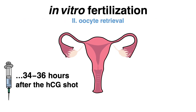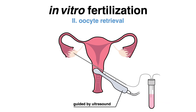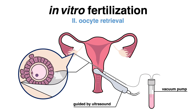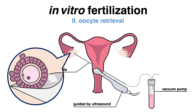The next step is oocyte retrieval. Regardless of the stimulation procedure, mature oocytes are retrieved around 35 hours after the HCG injection. This is performed using anesthesia. Guided by a transvaginal ultrasound, the physician inserts a needle through the vagina into the ovaries to remove eggs from each follicle.